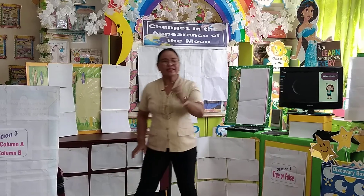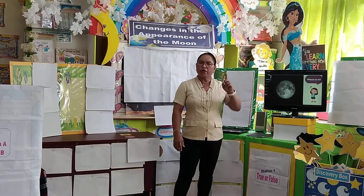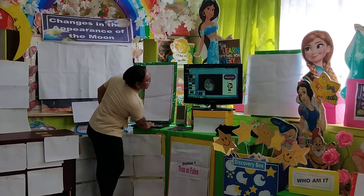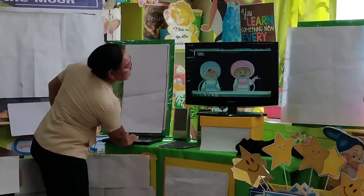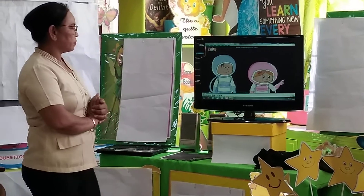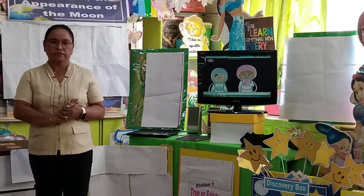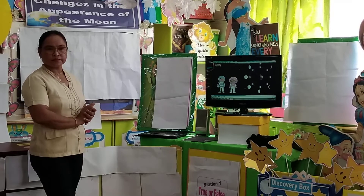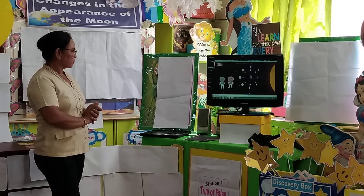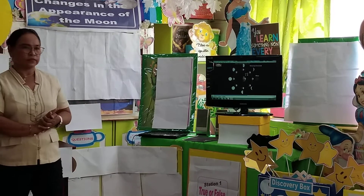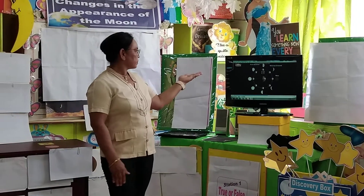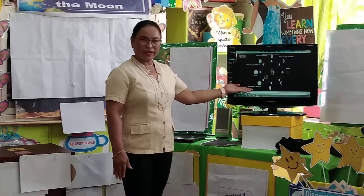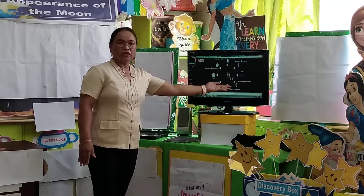Now, for you to know what are the changes in the appearance of the moon, I want you to take a look at this video. The phases are named after how much of the moon we can see and whether the amount visible is increasing or decreasing each day. The names of these phases are: new moon, waxing crescent, first quarter, waxing gibbous, full, waning gibbous, last quarter, and waning crescent.